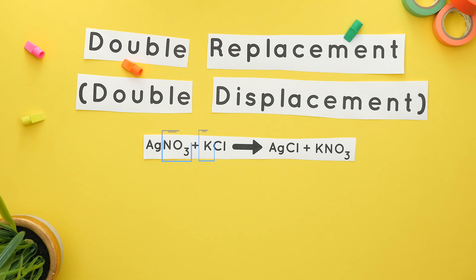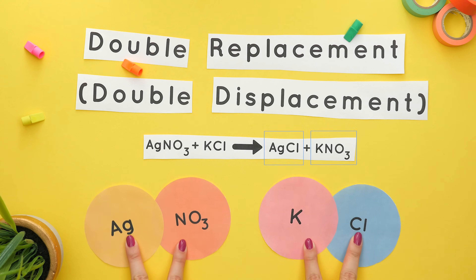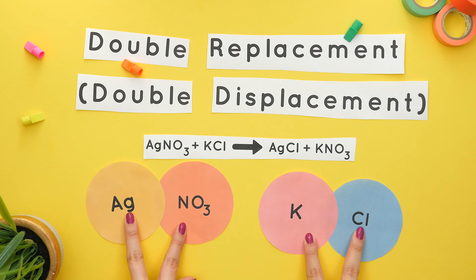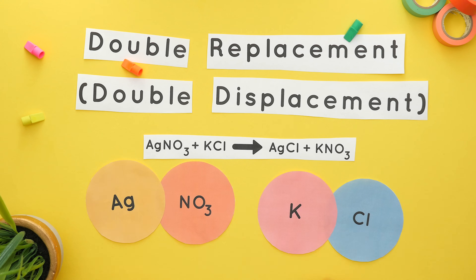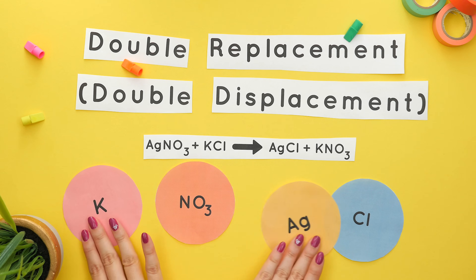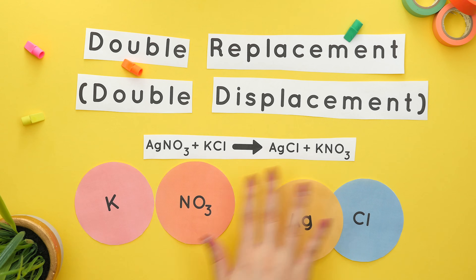The inner elements combine and the outer elements combine to form our new products. Or you can think of it as the metals are switching again to form our new products.